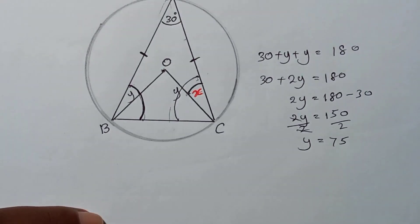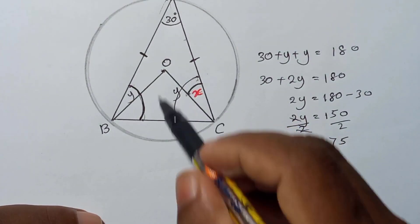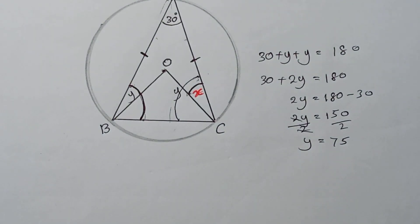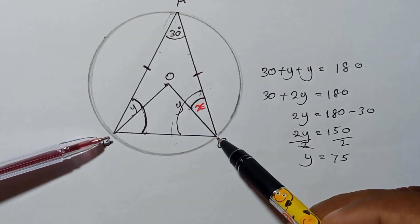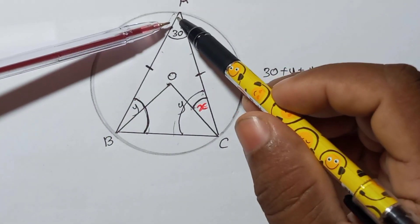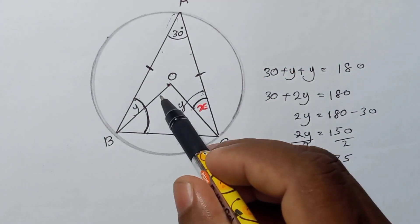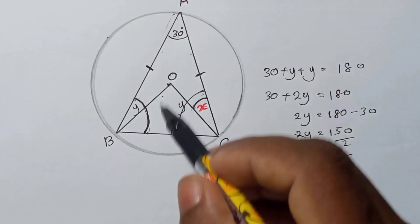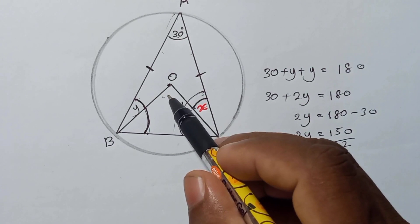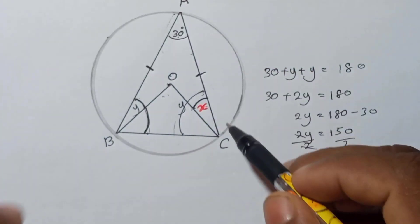If you divide both sides by 2, your y value will be 75. Very simple. That means this angle is 75. Now again, from the same two points go to center, from the same two points go to vertex, so that means this angle must be here 30, here should be 60.